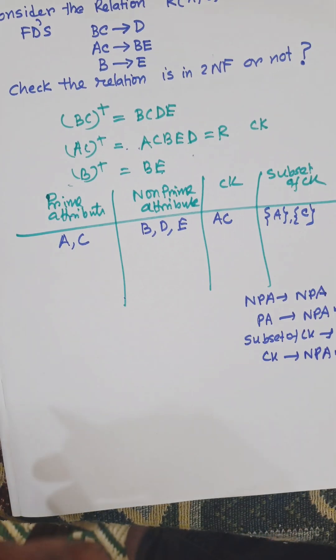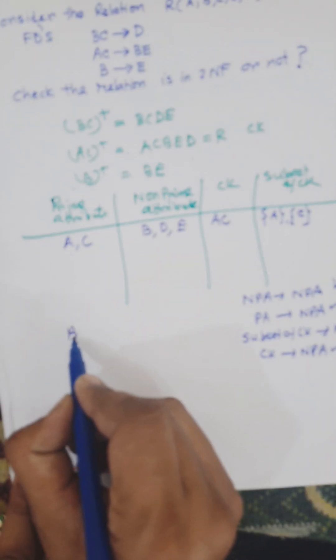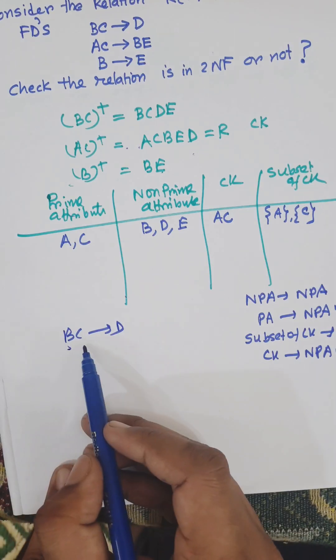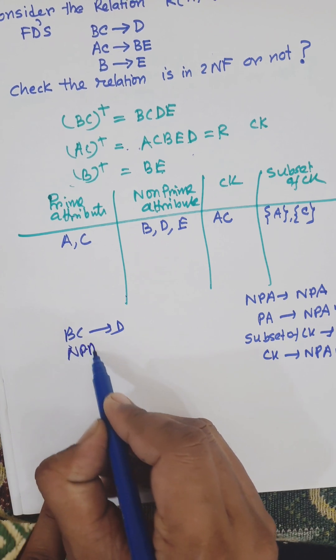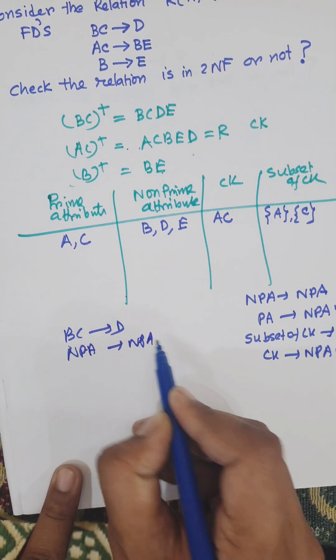Consider the FDs. First, BC→D: both BC and D are non-prime attributes. Non-prime to non-prime is okay, so this satisfies 2NF.